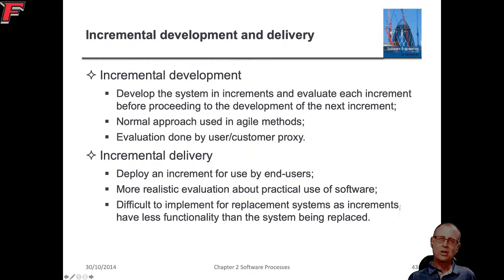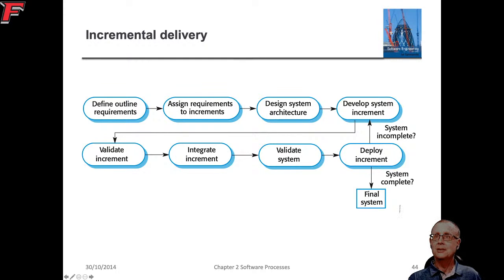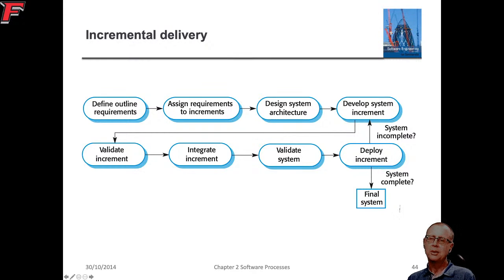However, once we've started development on a particular increment, we have to freeze the requirements. One of the biggest problems with software projects is changing requirements during development; the key piece about the increment is that the requirements are frozen so we can move forward. The flow goes: define requirements, assign requirements to increments, design the architecture, develop an increment, validate the increment, integrate it into the existing system, validate the new system, deploy the increment, and then determine if requirements are done.